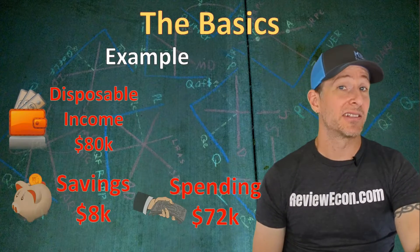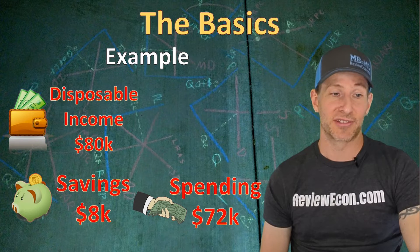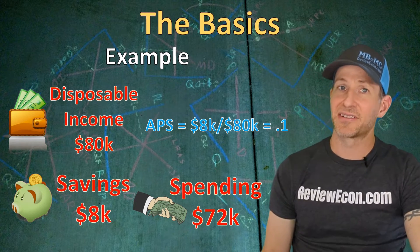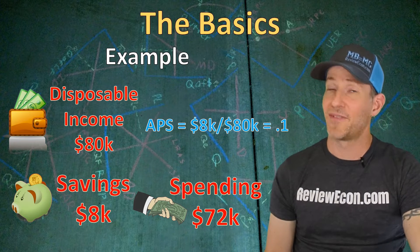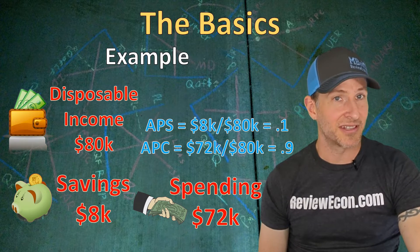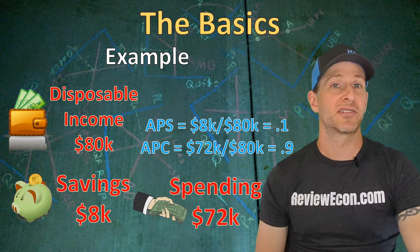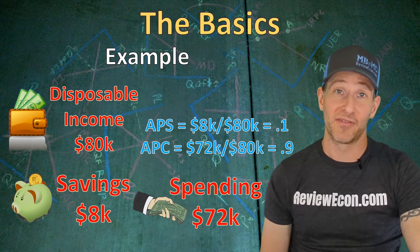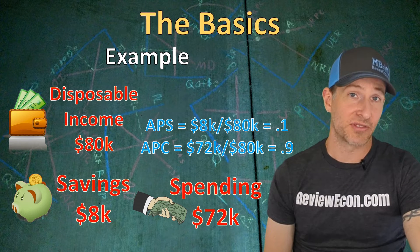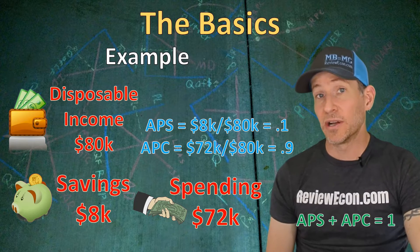Getting back to our example: the consumer with $80,000 of disposable income saved $8,000 and spent $72,000. Their average propensity to save is 0.1 — that's $8,000 in savings divided by $80,000 income. The average propensity to consume is 0.9 — that's $72,000 divided by $80,000. It's 90% of income spent, expressed as a decimal. Since consumers will always spend and save 100% of their income, the average propensity to save plus the average propensity to consume will equal one.